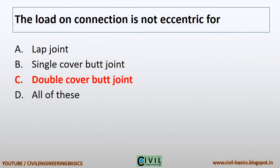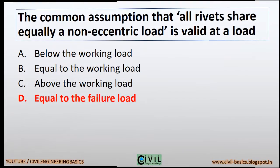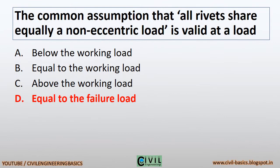The load on connection is not eccentric for a double cover butt joint. The common assumption that all rivets share equally a non-eccentric load is valid at a load equal to the failure load.